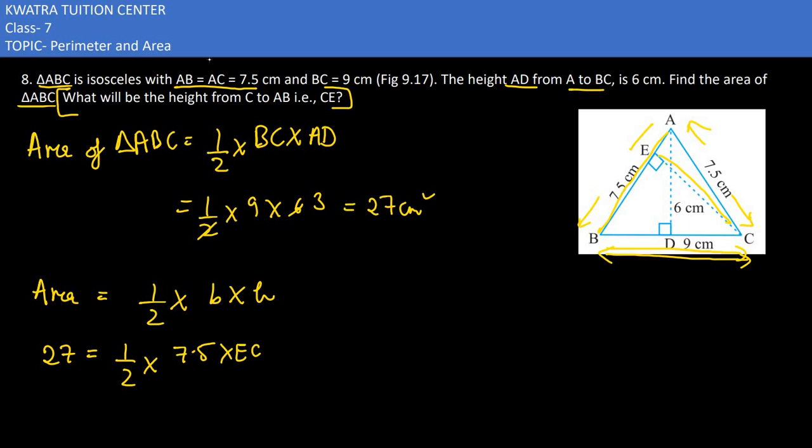Now 27 goes to the left side, multiplied by 2 it becomes 54. On the right side, 7.5 times EC would be there. So we divide by 7.5 to find out EC. So we have 54 divided by 7.5. The resultant here would be 7.2 centimeter as EC. EC value came out to be 7.2 centimeter.